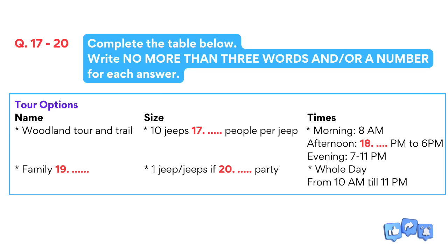Our second most popular tour is the Family Exclusive. This tour is for the whole day and for only one group. Usually it is just one jeep, but sometimes there are two if the party is large. These tours go from 10 a.m. till 5 p.m. and include lunch at the Brown Bear in Lower Middleton. We have a number of different routes for these tours as we don't want our premium clients being made to feel that they are part of a large package deal. You will be told which route to take with your weekly schedule.